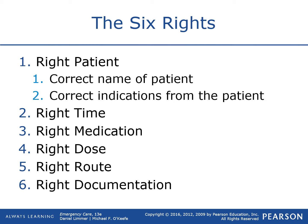Second is right time — this comes into play with multiple doses, such as nitroglycerin which can only be given once every five minutes. Third is the right medication — confirm this is the medication you selected and that it's in date. Fourth is the right dose — make sure you're not overdosing or underdosing. Fifth is the right route — there are many routes to administer medication. And sixth is right documentation — document what drug you gave, the dose, the time, and the effects.